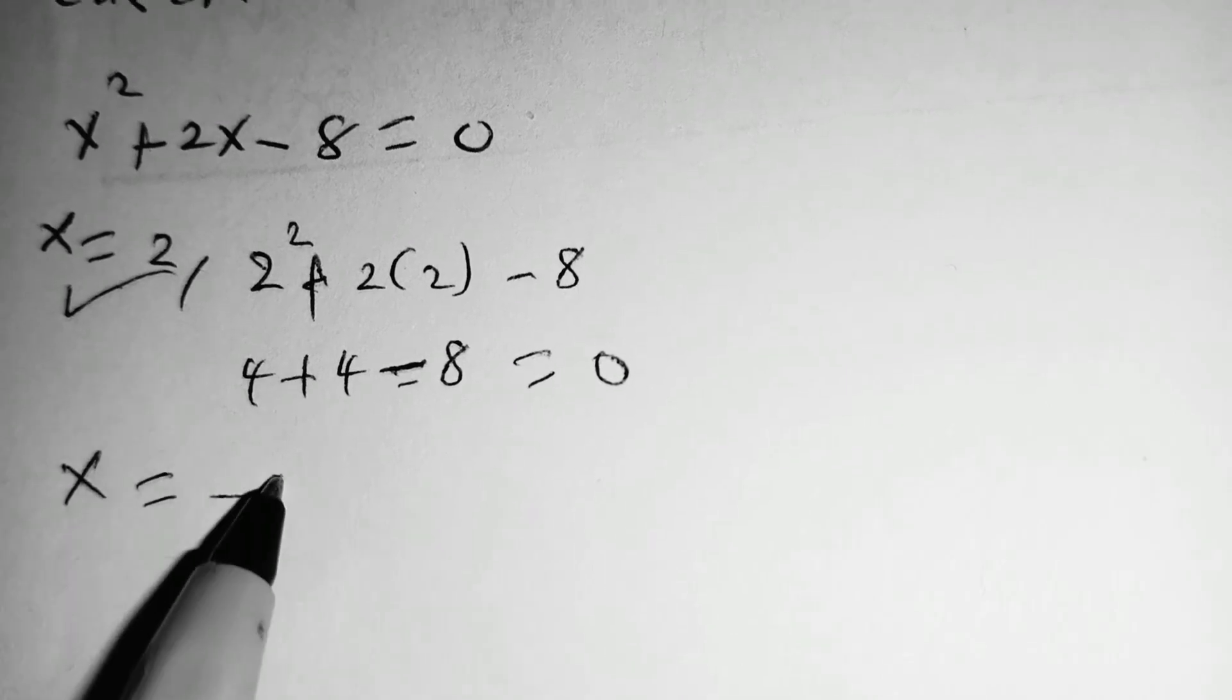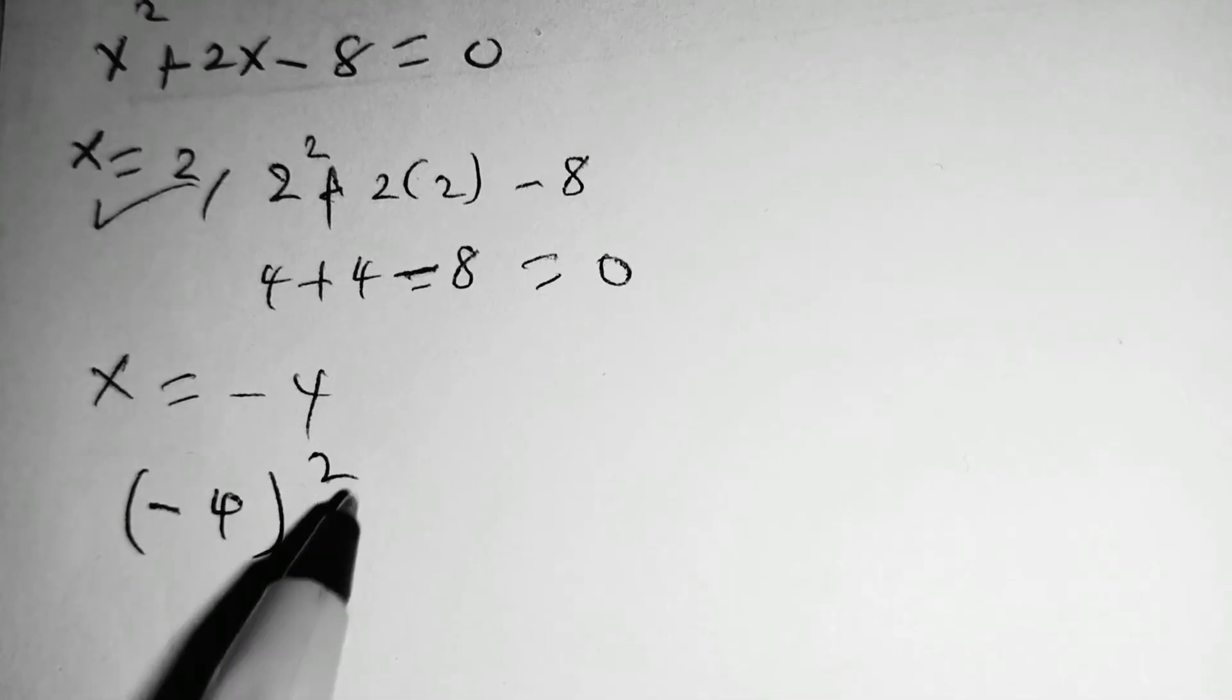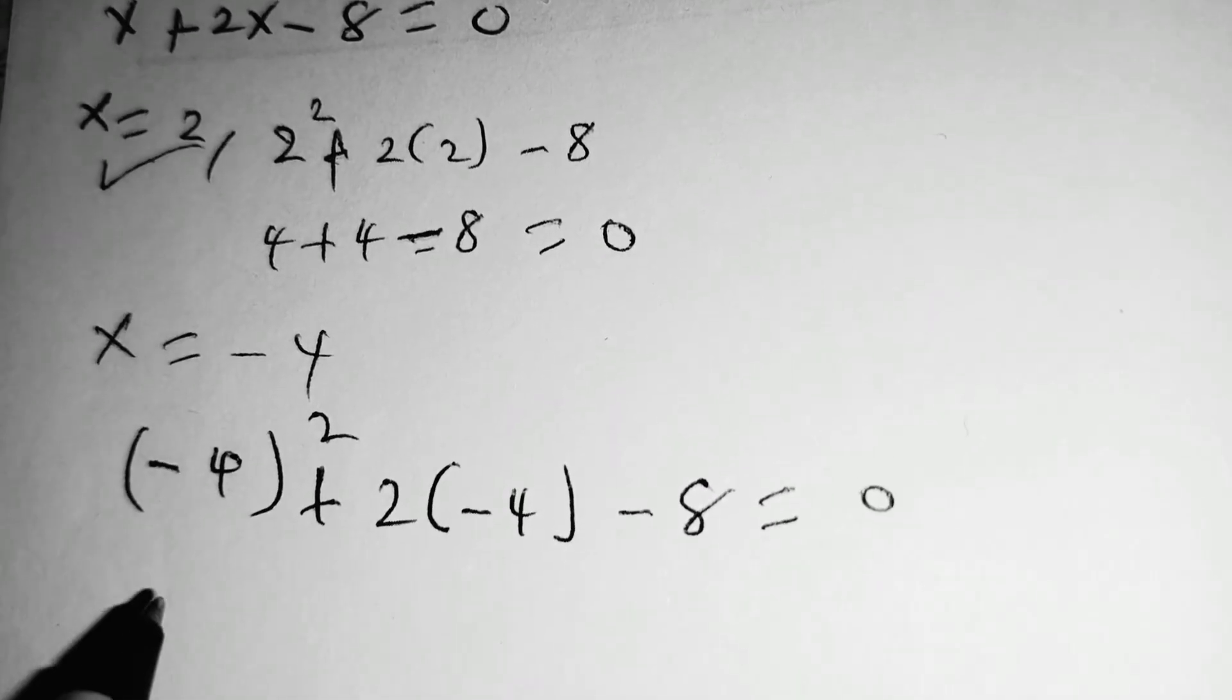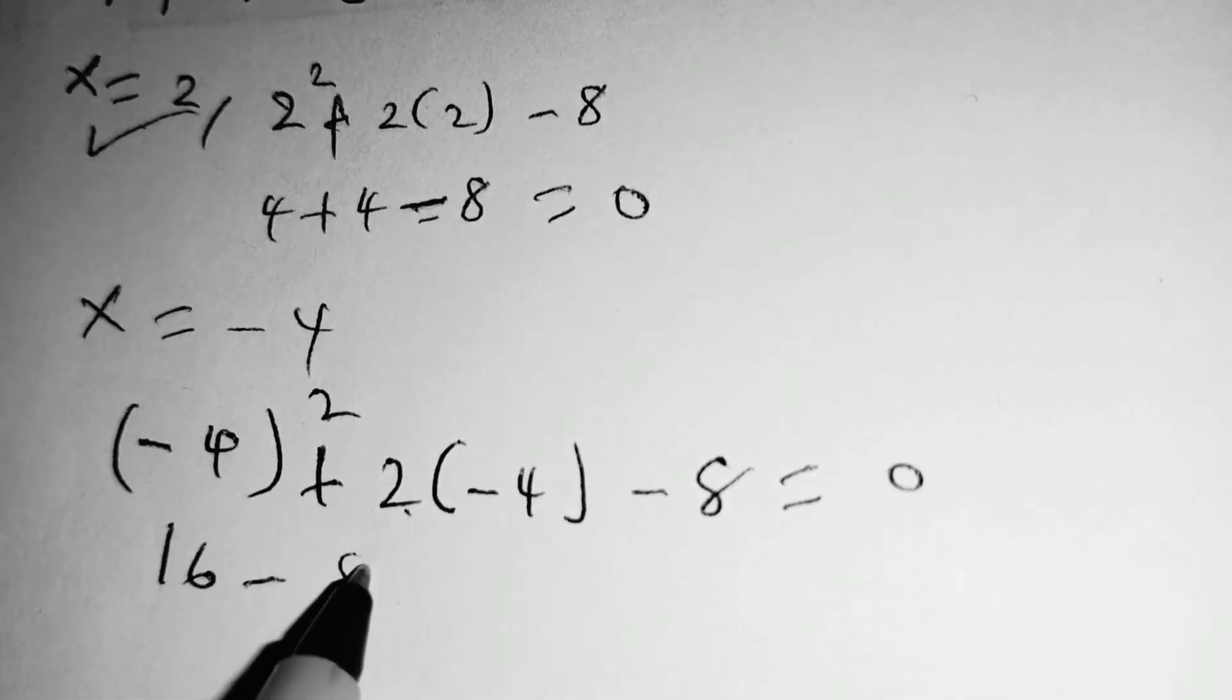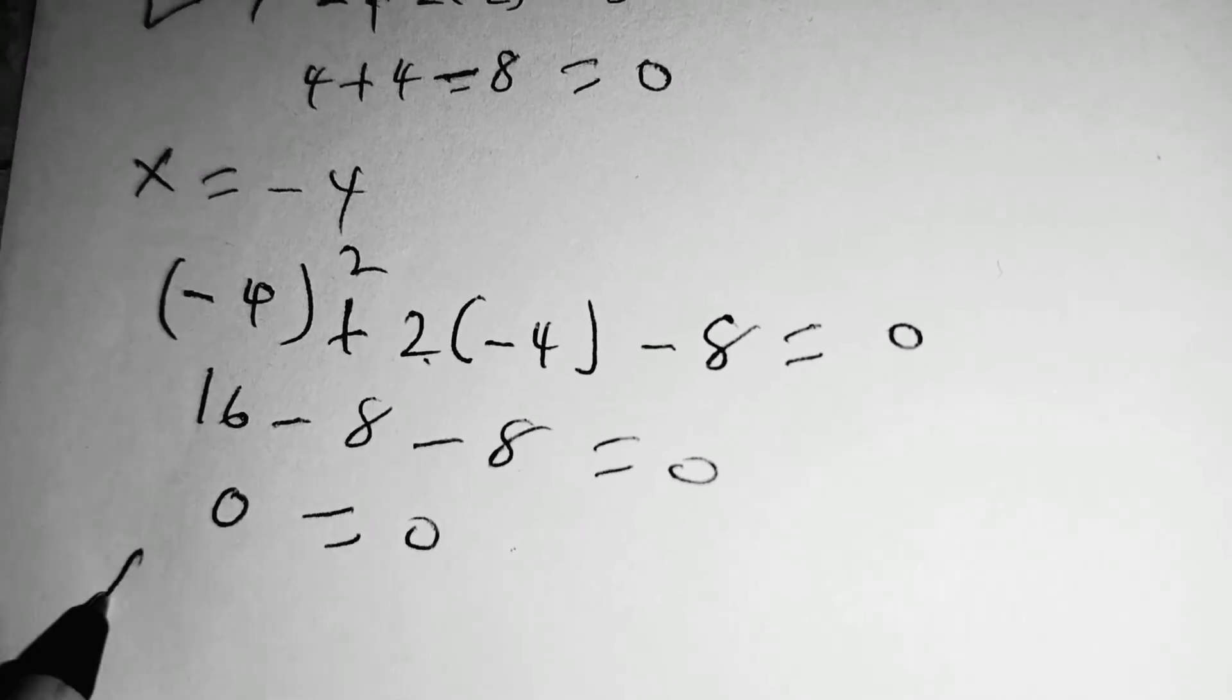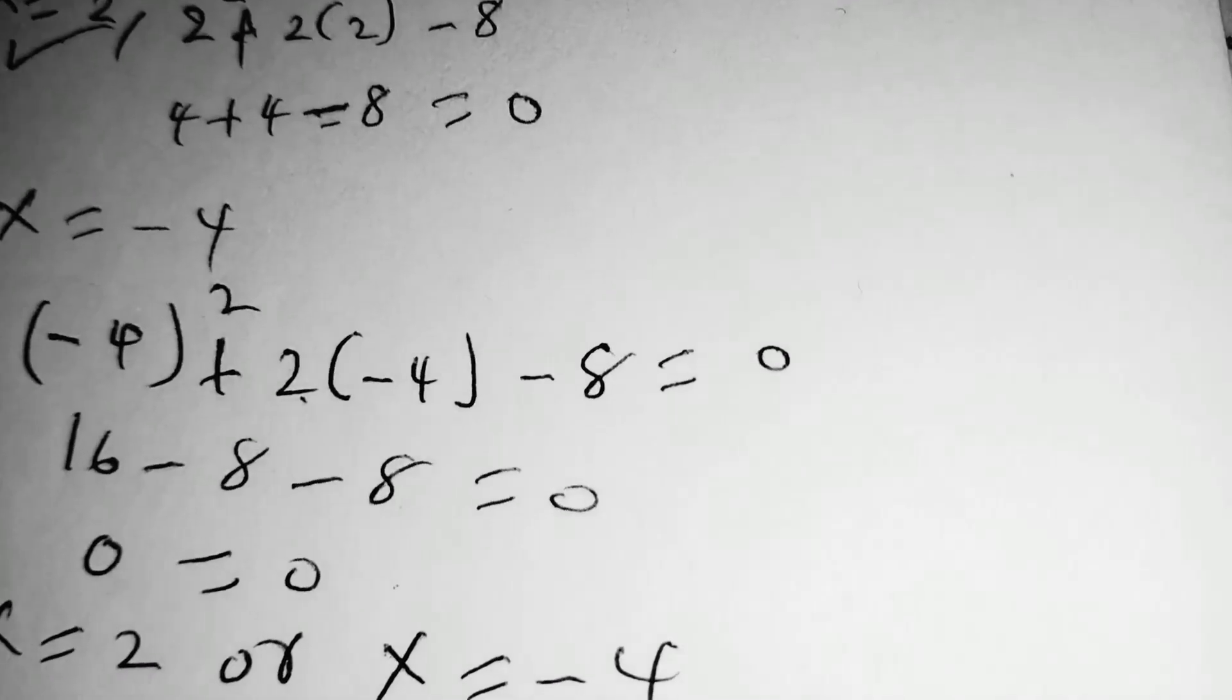When x is equal to negative 4, we shall have negative 4 squared plus 2 multiplied by negative 4 minus 8, it should give us 0. So this is 16. 2 times negative 4 is negative 8 minus 8 is equal to 0. And of course this is clearly 0 is equal to 0, meaning that in our solution x is equal to 2, or x is equal to negative 4, are our correct answers.